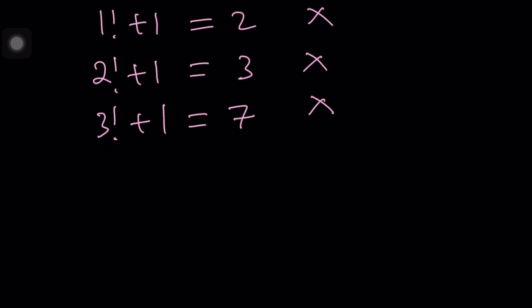What happens if x equals 4? 4 factorial is 24, 24 plus 1 is 25 and yes we have a solution because 25 is a perfect square. And that's just perfect isn't it?